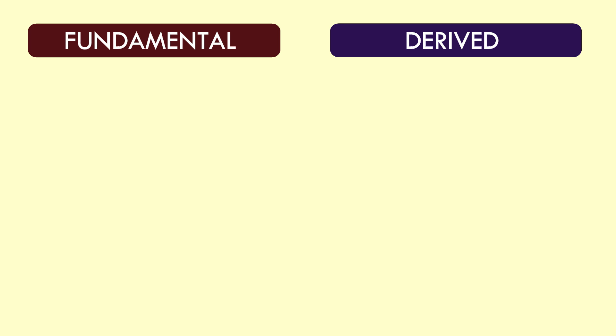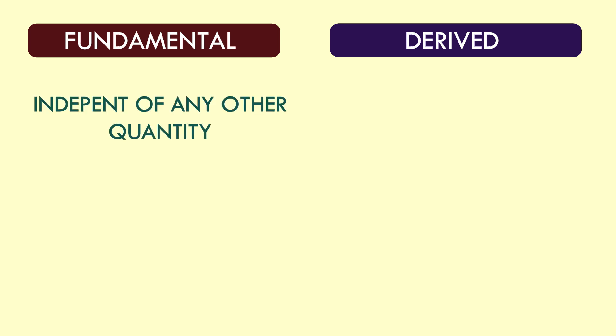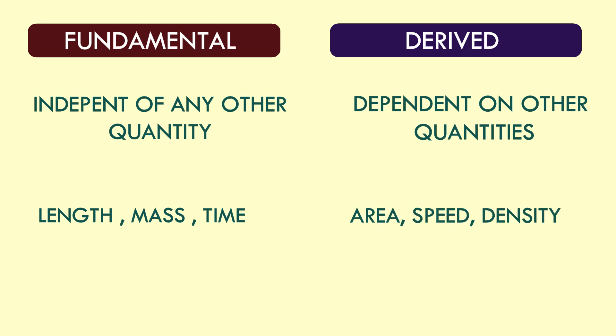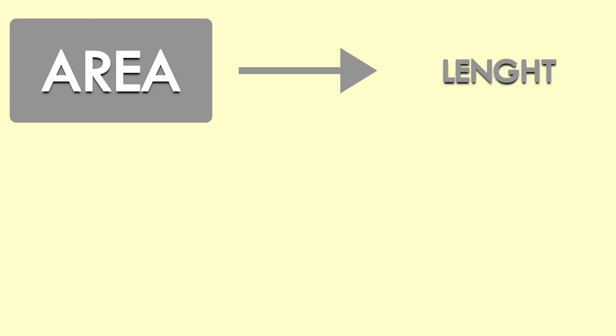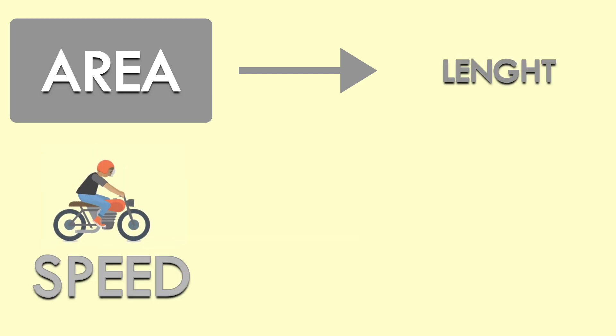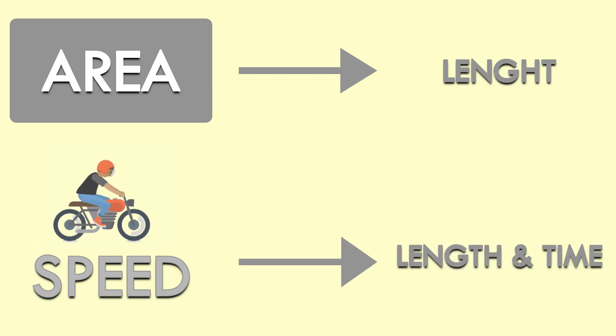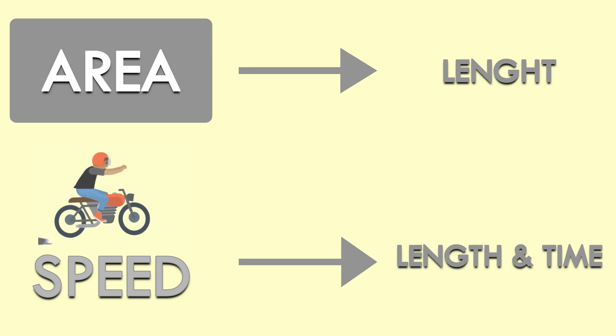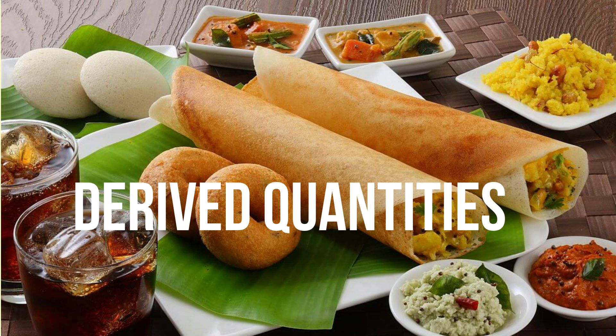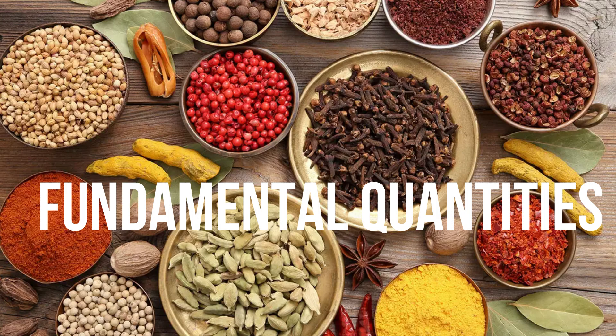To understand more about this, we will move to types of physical quantities. We can classify physical quantities into two main categories: fundamental quantities and derived quantities. Fundamental quantities are those which do not depend on any other quantities — examples are length, mass, and time. Derived quantities are those which are dependent on other quantities — for example area, speed, and density. The unit of speed can be derived from distance and time.